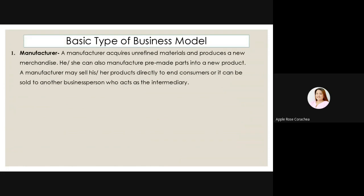What are the basic types of business model? Number one, manufacturer — a manufacturer acquires unrefined material and produces new merchandise, or can also manufacture pre-made parts into a new product. A manufacturer may sell products directly to end consumers, or it can be sold to another businessperson — the merchandiser — who acts as the intermediary or tagapamagitan. So, pwede yung manufacturer direct na magtinda sa mga consumer o ibibenta niya ng maramihan sa mga intermediary or mga merchandiser.